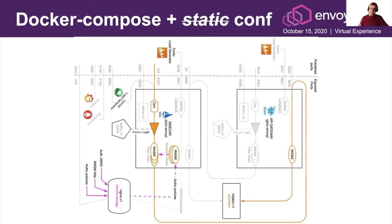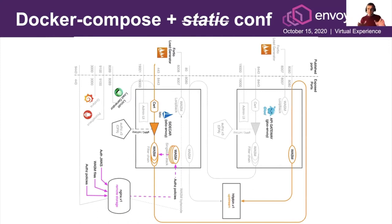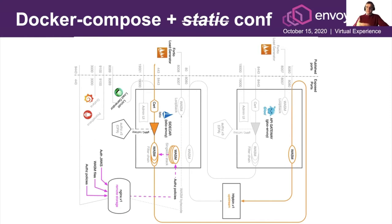So you iterate until you finally arrive at something complex. I am now using several Envoy proxies of different versions, and WASM extensions are everywhere. Let me share some of the key highlights of what I learned.